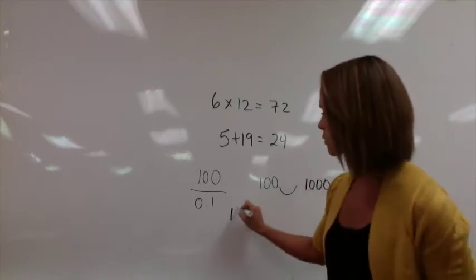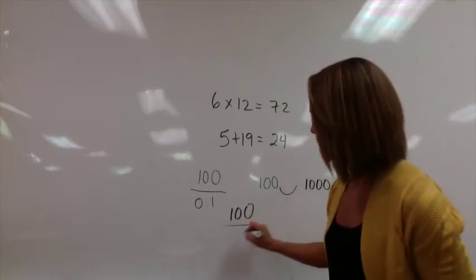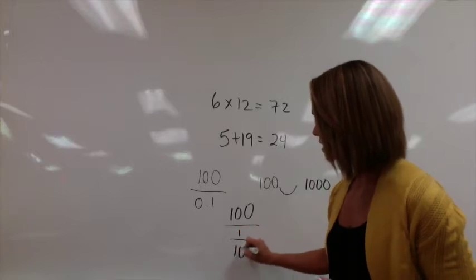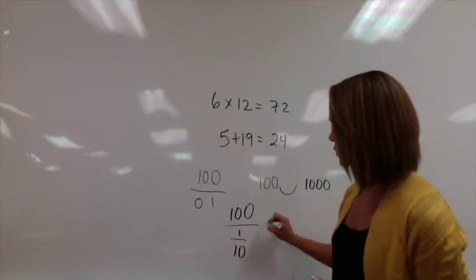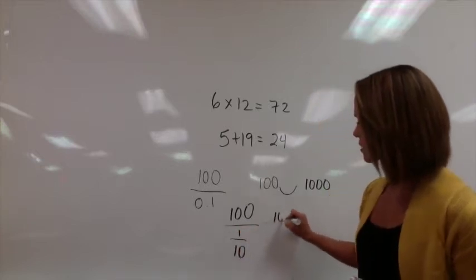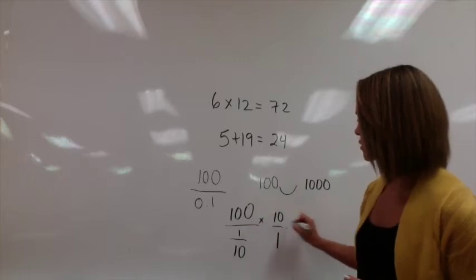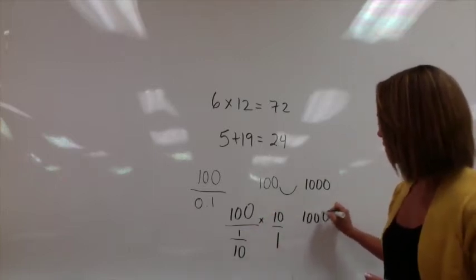Another approach would be looking at that as 100 divided by 1 tenth, which means that you would multiply by the reciprocal, and you would get 100 times 10, and you'd get 1000.